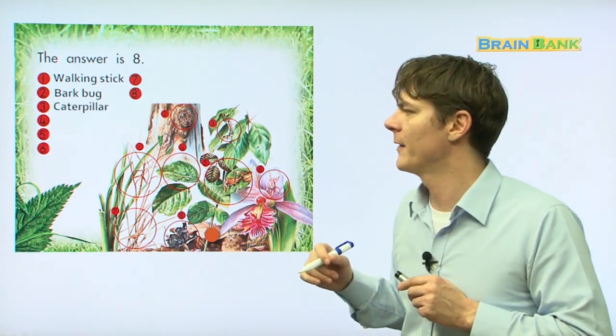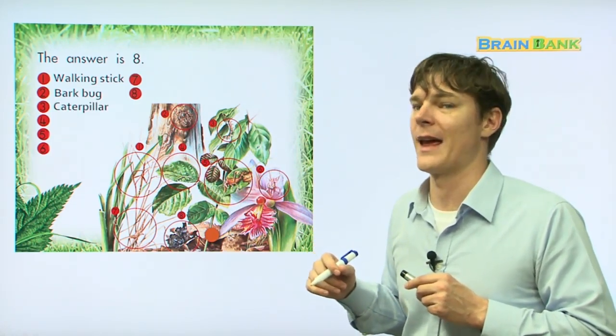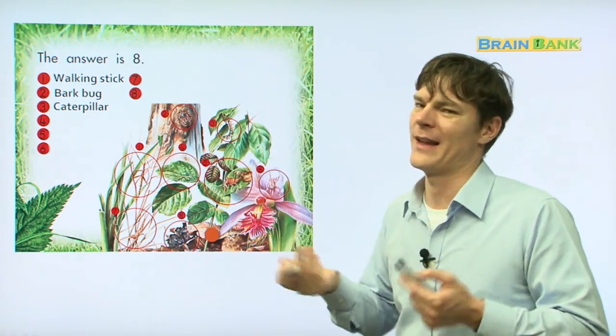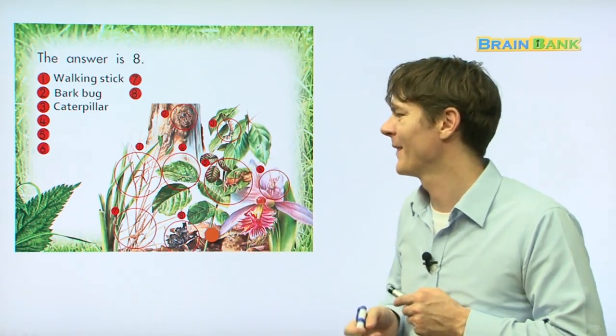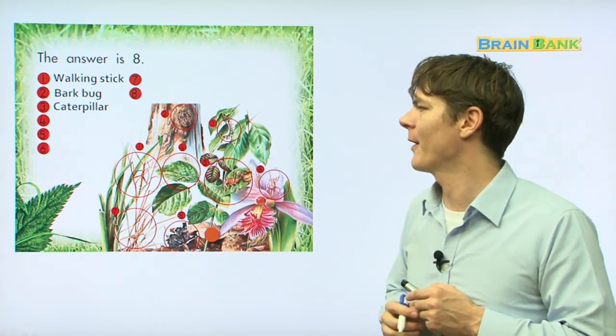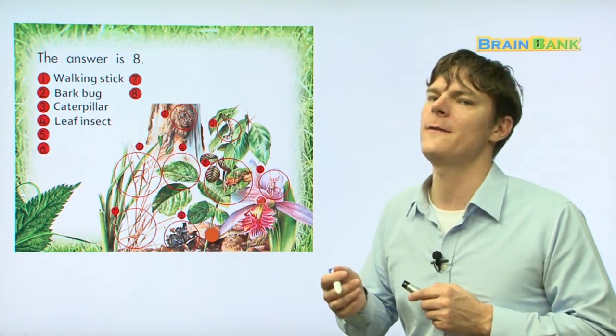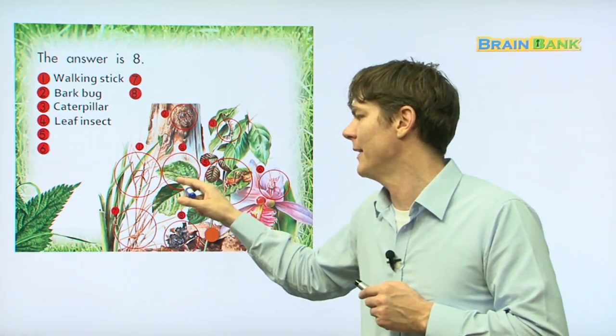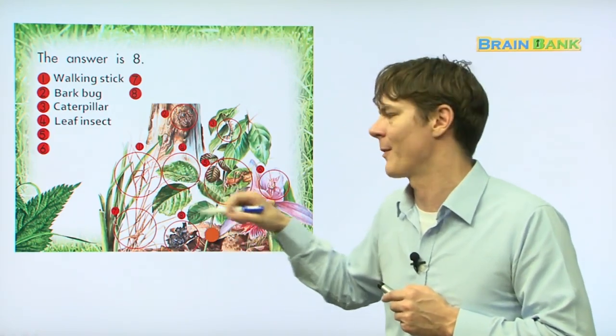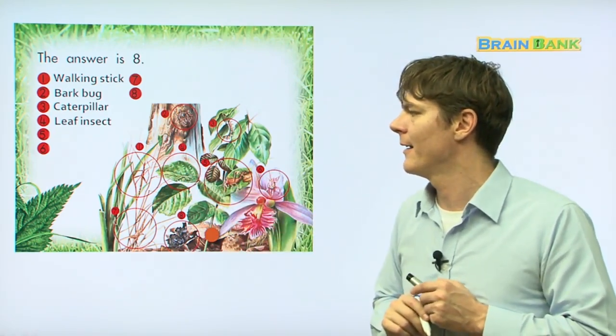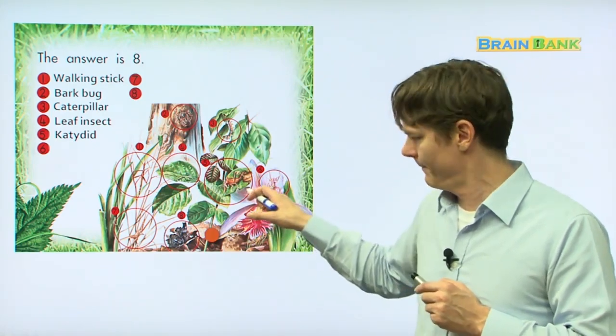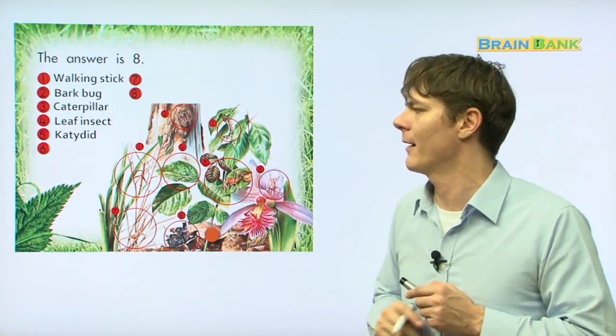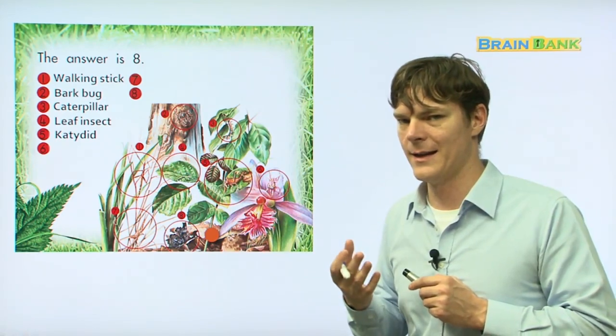Then we have caterpillar. Right there. We found that. That was very easy, right? Then we have number four is a leaf insect. Ah, because he looks like a leaf, right? He looks like a leaf. Then we have a catydid. He's kind of big. He's right there. Everyone, catydid.